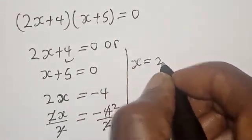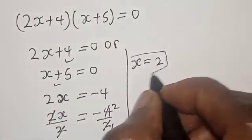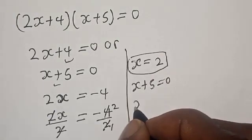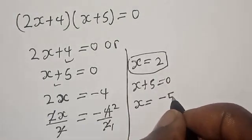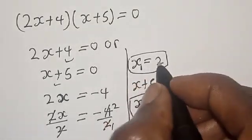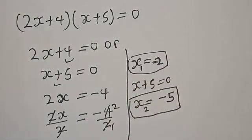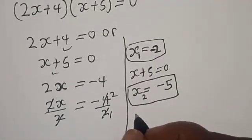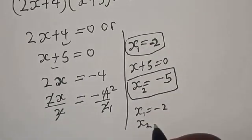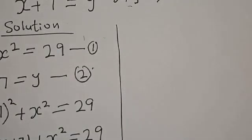Therefore x₁ is equal to minus 2. Also from (x plus 5) equals 0, we get x₂ is equal to minus 5. So the values of x are x₁ equals minus 2 and x₂ equals minus 5.